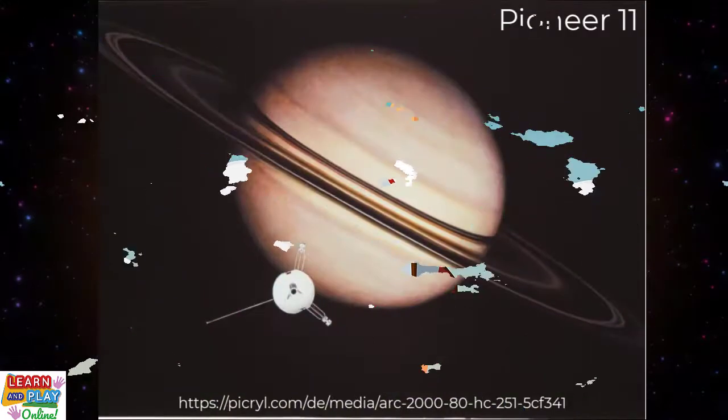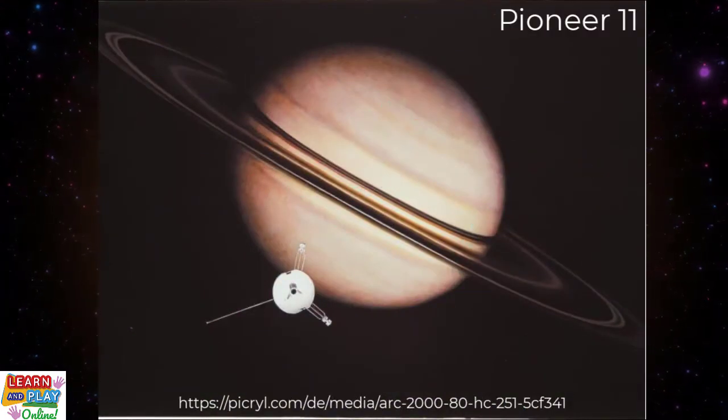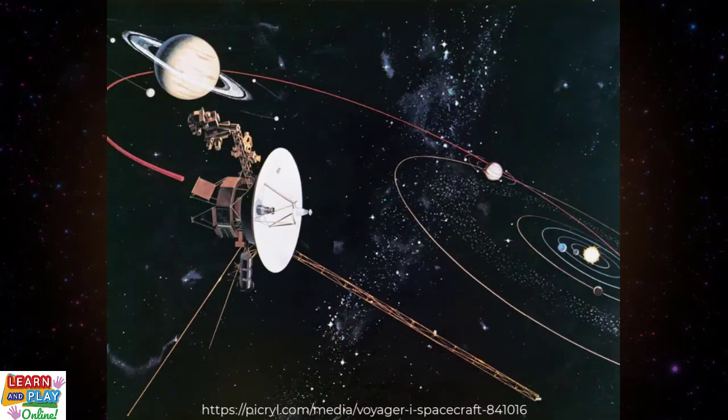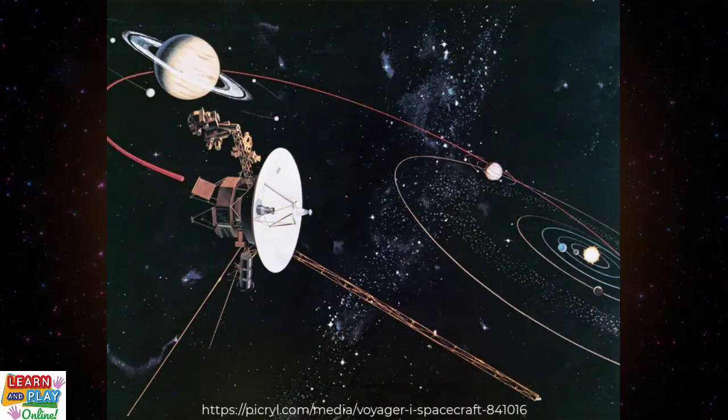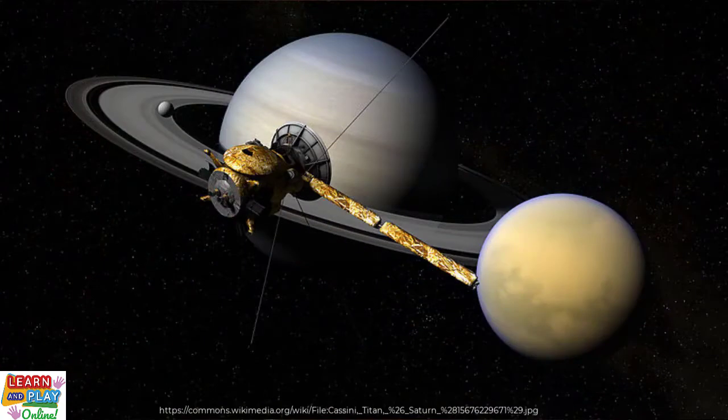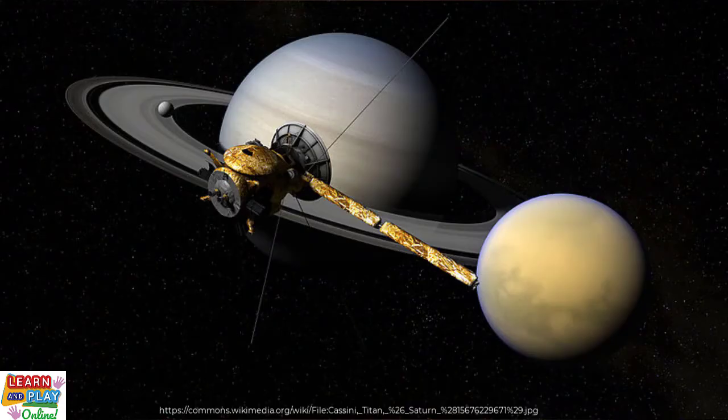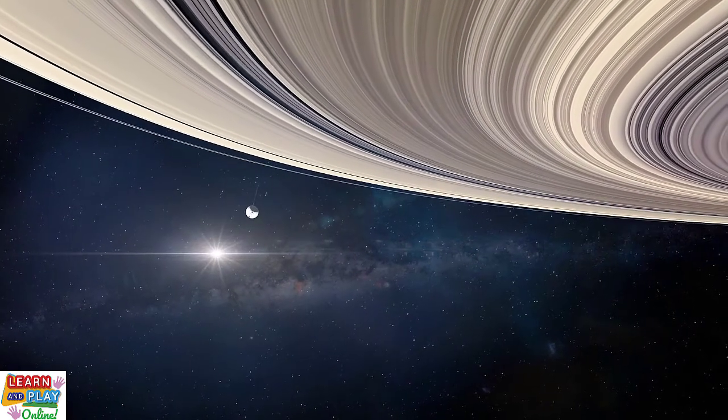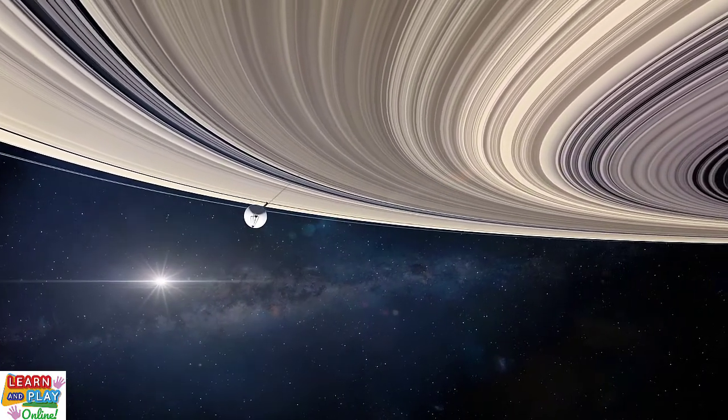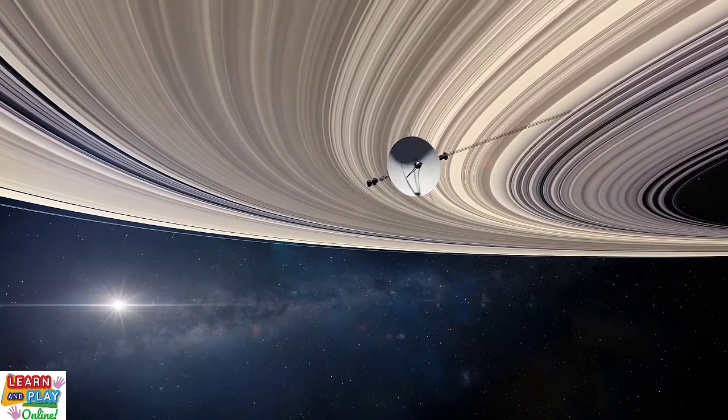The first to fly by Saturn was NASA's Pioneer 11 in 1979. Then, in the early 1980s, NASA sent Voyager 1 and 2. The last spacecraft to ever be sent to study Saturn was Cassini in 2004. Cassini lasted 13 years out in space collecting and sending data about Saturn back to Earth, before it was destroyed in 2017 when it plunged into Saturn's atmosphere.